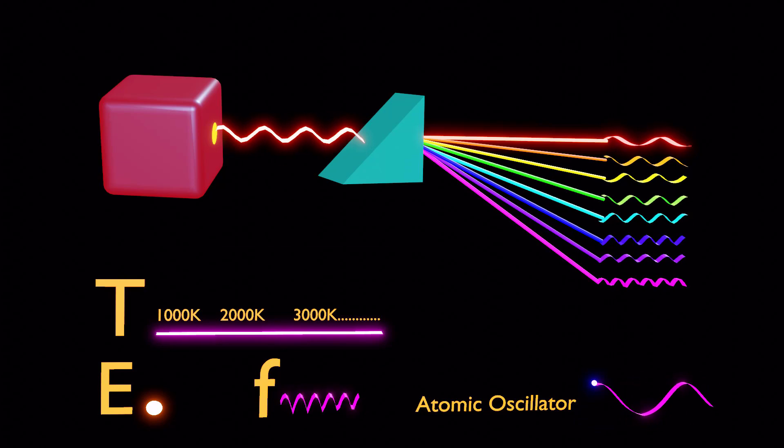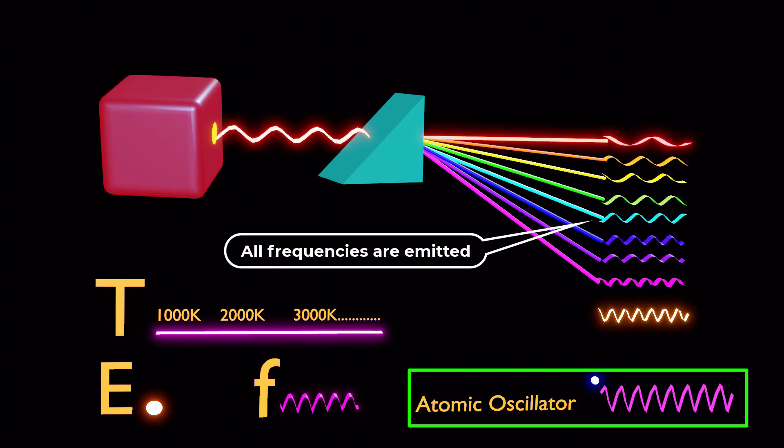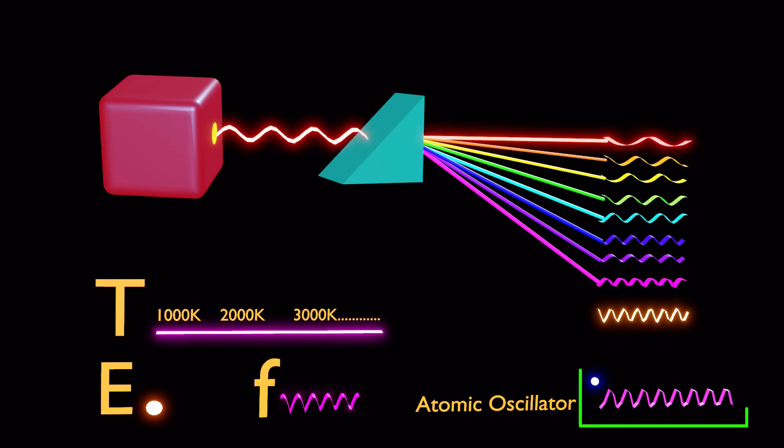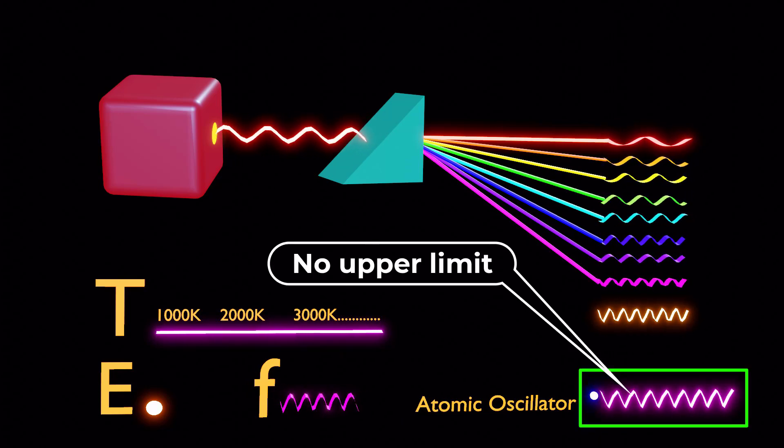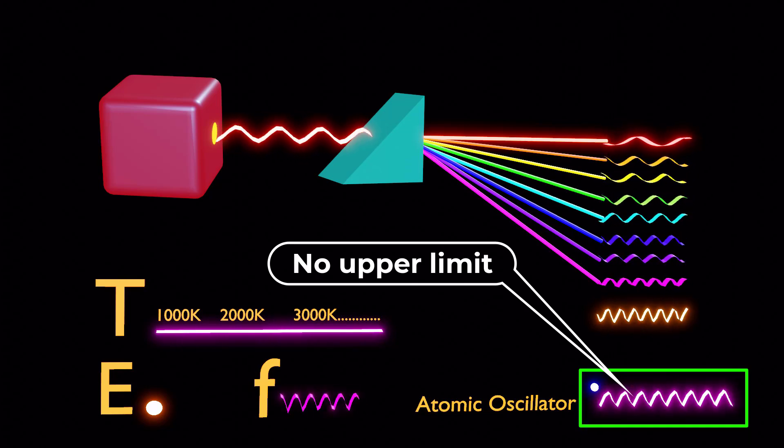Therefore, the oscillators were considered to emit radiations of all energies and frequencies, leading to the prediction of no upper limit on the energy or intensity of light produced by oscillators vibrating at high frequencies.